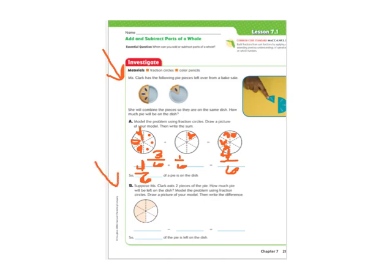Okay, so B says, suppose Ms. Clark eats two of the pieces of the pie. So she's starting with her four-sixths that she had, and she's going to eat two out of those six.